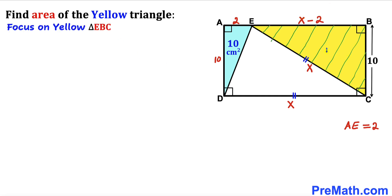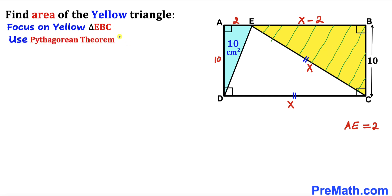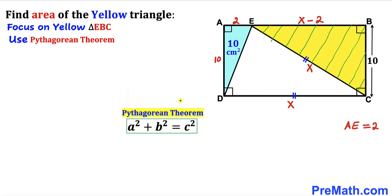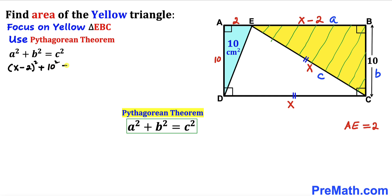Let's focus on yellow triangle EBC, whose side lengths are x minus 2, 10, and x. Since we're dealing with a right triangle, we'll use the Pythagorean theorem: A² + B² = C². Calling x the hypotenuse C, side A is x minus 2, and side B is 10. So: (x − 2)² + 10² = x².